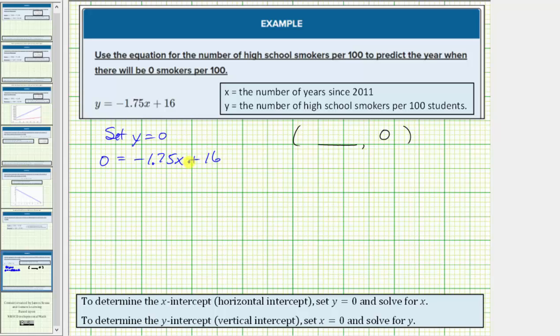Solving for x, we'll isolate the x term by subtracting 16 on both sides. So we'd have negative 16 equals, on the right side this would be zero, so we have negative 1.75x.